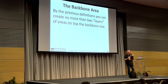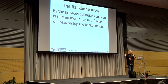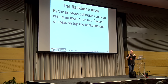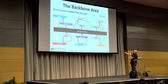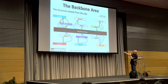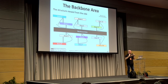You cannot create more than two layers of areas on top of the backbone. If you have a backbone area, you can create one level of areas directly connected to it, and one further level connected via virtual links. With virtual links, you can jump just one area, not two.